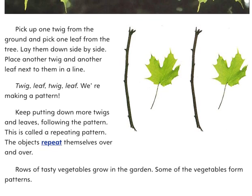Pick up one twig from the ground and pick one leaf from the tree. Lay them down side by side. Place another twig and another leaf next to them in a line: twig, leaf, twig, leaf. We're making a pattern! Keep putting down more twigs and leaves following the pattern. This is called a repeating pattern — the objects repeat themselves over and over.